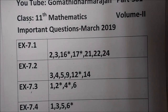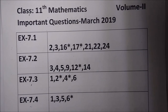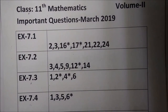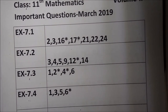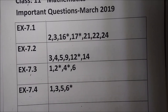Exercise 7.3: question numbers 4, 5, 9, 12, and 14. Then question number 7.3, subdivision 1, 2 more important, 4 more important. Then question number 6. Now exercise 7.4: questions 1, 3, 5, 6 more important.